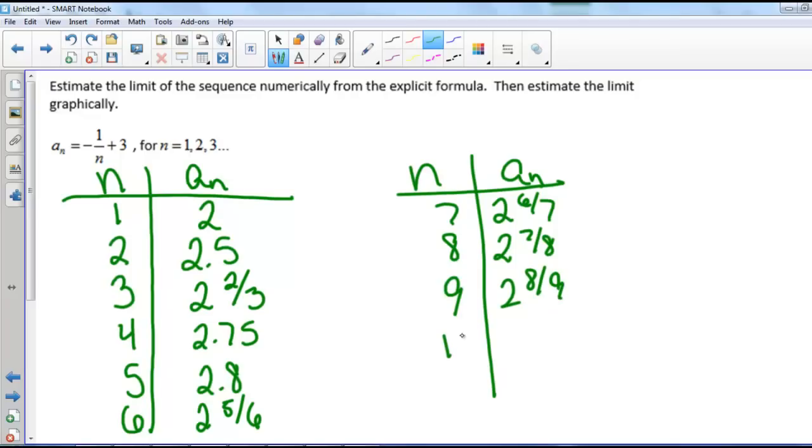And at 10, we're getting 3 minus 1 over 10, so that's 2 and 9 tenths, which is also 2.9. So we can see that we're getting very, very close to 3. So we're going to estimate that the limit of this sequence from our numerical table is 3.